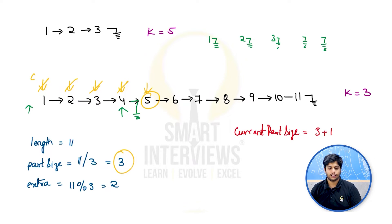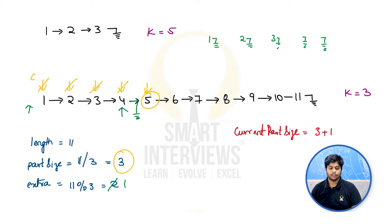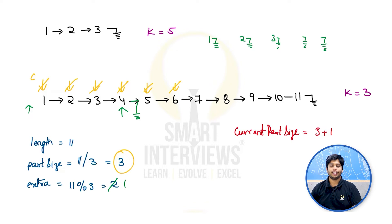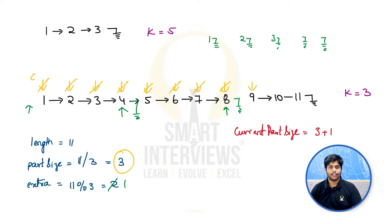In the next iteration, we start again with current (now at node 5). One extra node was already used, so we have 1 remaining. Part size is 3 plus 1 extra = 4 again. We iterate 4 times: reaching nodes 6, 7, 8, then 9. Previous ends up pointing to node 8, and we set previous.next to null. We add this segment to our result list.